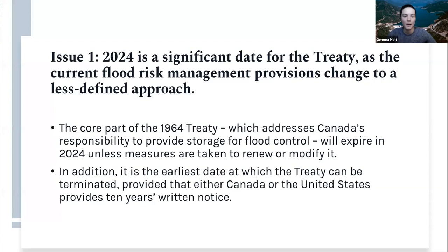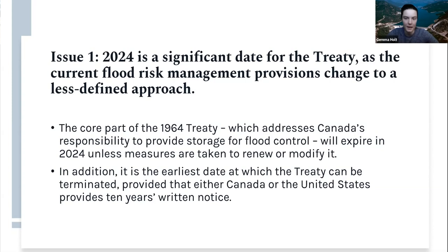There are five main issues raised during ongoing modernization conversations. First, the current flood risk management provisions change in 2024: instead of Canada providing a set amount of flood control every year, it will be on an on-call basis, and the U.S. will pay annually based on assessed flood risk. This is the core of the original treaty and will expire unless renewed or modified. It is also the earliest termination date, provided either country gives 10 years' written notice — but no one has done so, so the treaty will not be terminated in 2024. This catalyzed renegotiations beginning around 2011–2012.